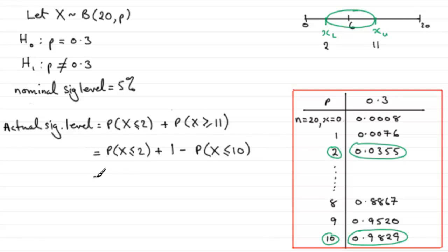So we can take our values from the table. X being less than or equal to 2 is 0.0355, and then we've got plus 1 minus, and the probability that X is less than or equal to 10 was 0.9829.